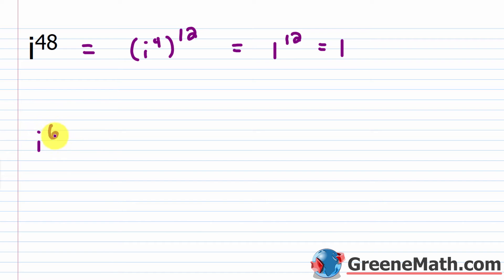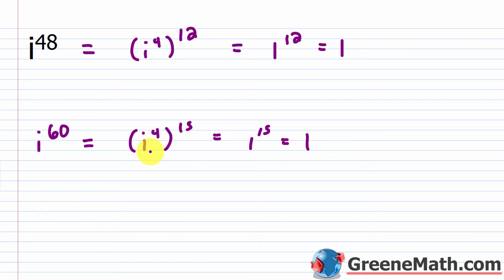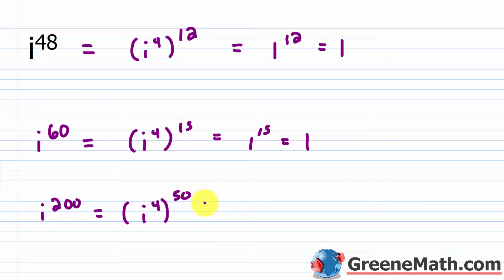For example, i to the power of 60: 60 divided by 4 is 15, so we write this as i to the fourth power raised to the 15th power, which is one to the 15th power — just one. Similarly, i to the power of 200: 200 divided by 4 is 50, giving i to the fourth power raised to the 50th power, which is one. So if i is raised to a whole number exponent that's divisible by four, it simply equals one.